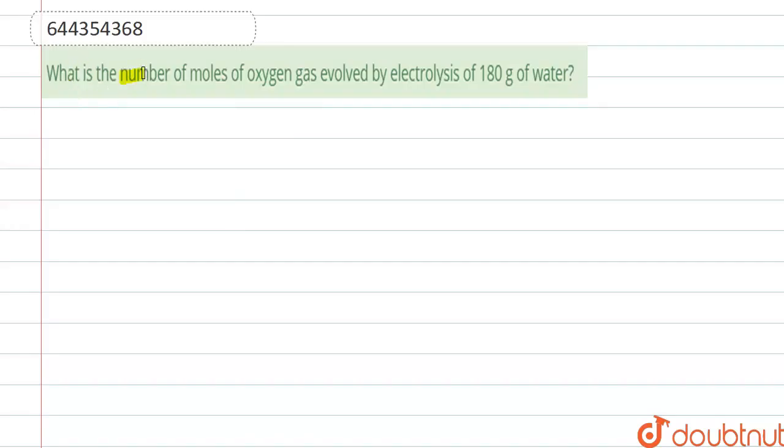What is the number of moles of oxygen gas evolved by the electrolysis of 180 grams of water? So during electrolysis of water, it dissociates into H2 and O2 gas.